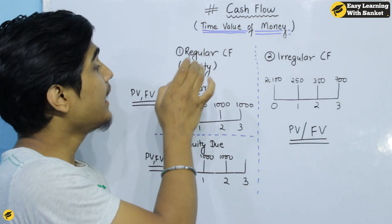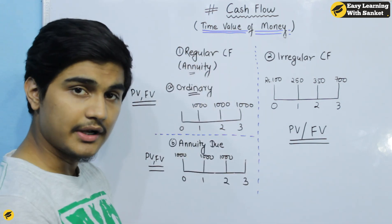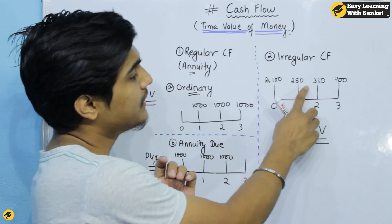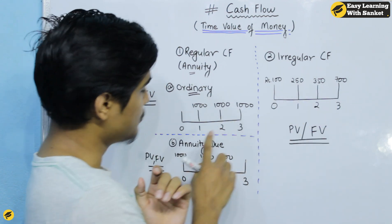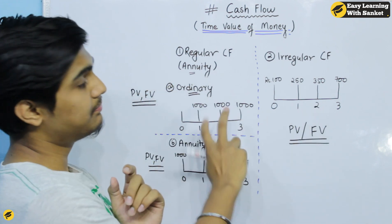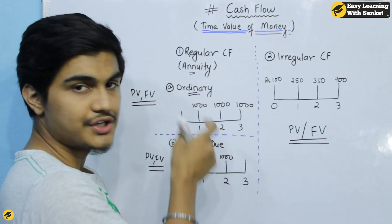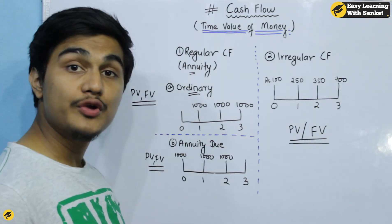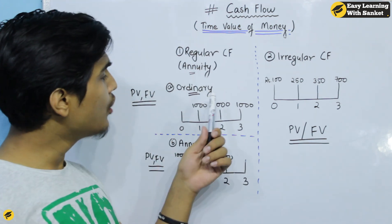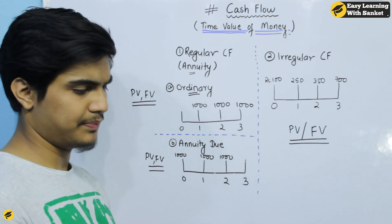There are two factors for regular cash flow. The amount of money is fixed and the time frame is fixed. When both the amount of money and the number of periods (NUT) are fixed, that is an annuity. There are two types: ordinary annuity or annuity due.